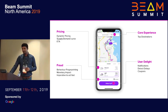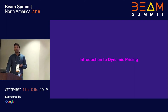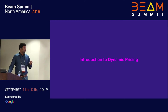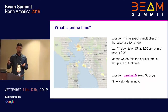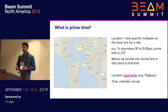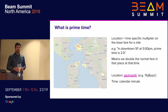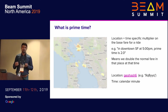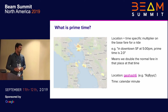I want to talk about dynamic pricing. Dynamic pricing is basically a price that changes based on certain constraints, environment, or different attributes. At Lyft, we call dynamic pricing 'prime time,' also known as surge pricing. Prime time is a location- and time-specific multiplier on the base fare of a ride. For example, if you have a ride in SF downtown at 5 p.m. — a peak commuter time — and prime time is 2x, your base fare will be doubled.